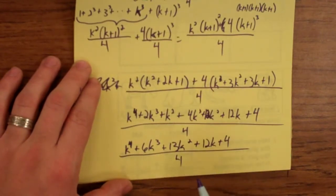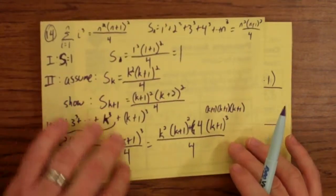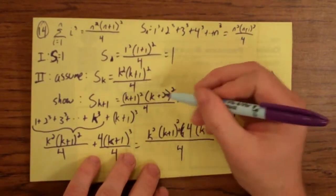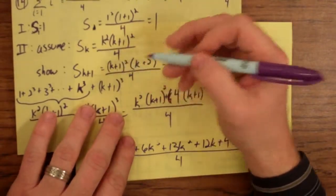See, this part right here is where, I could try and factor this, and it's doable, but what I could do is come back up here to the thing I'm trying to prove. Let's multiply this out and see if it's the same as that.